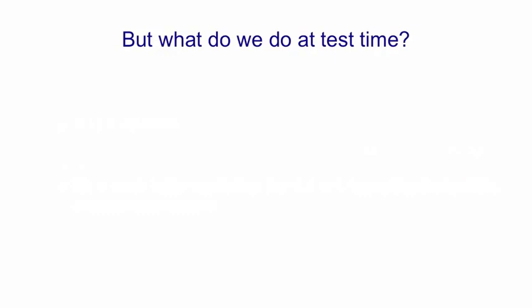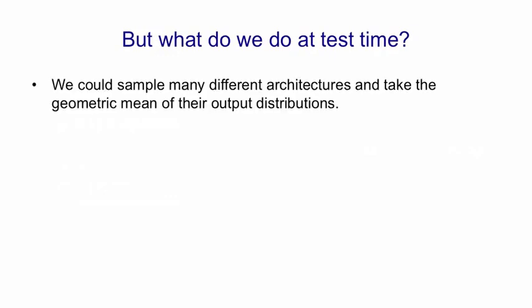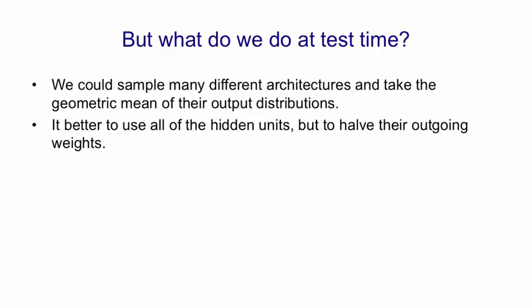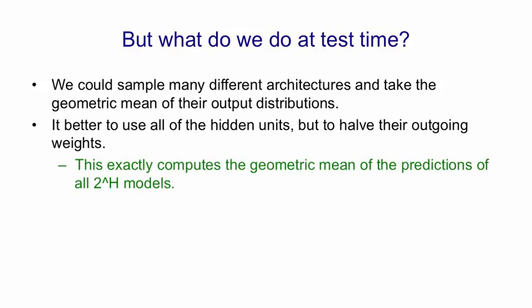The question still remains what we do at test time. So we could sample many of the architectures, maybe 100, and take the geometric mean of their output distributions. But that will be a lot of work. There's something much simpler we can do. We use all of the hidden units, but we halve their outgoing weights. So they have the same expected effect as they did when we were sampling. It turns out that using all of the hidden units with half their outgoing weights exactly computes the geometric mean of the predictions that all 2 to the H models would have used, provided we're using a softmax output group.